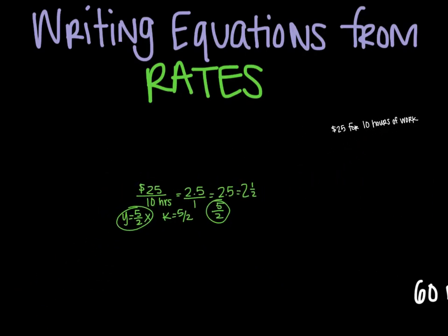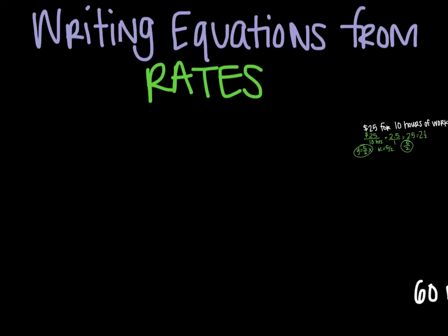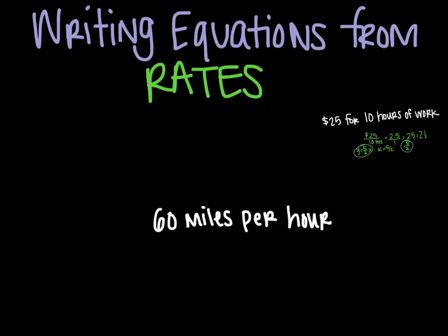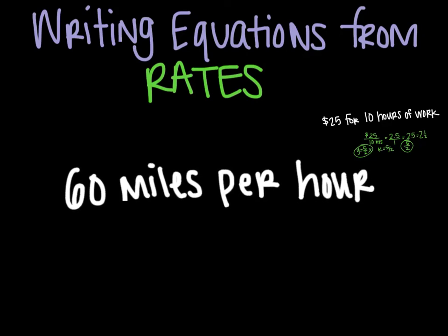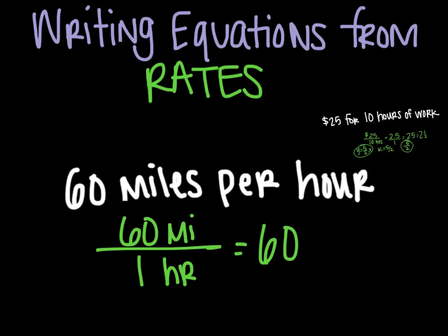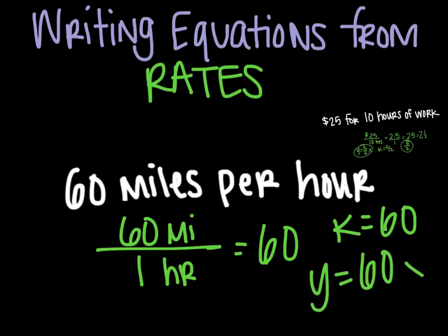The other way you could do it is you know that it's y over x, and so if you know that hours is your x, you can just go from there too. Here we have 60 miles per hour. 60 miles per 1 hour is what that means. So here I have my unit rate already, which means my slope, because we know that unit rate and slope are the same. My unit rate is 60, which means k is also 60. So my equation then would be y equals 60x.